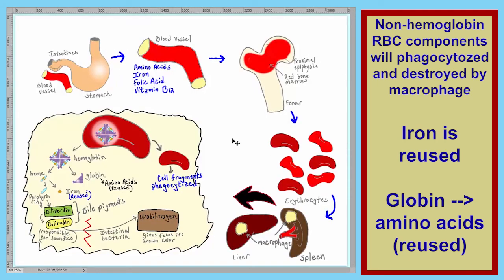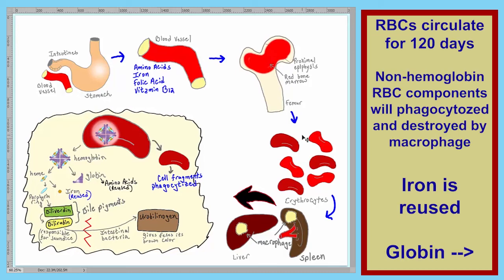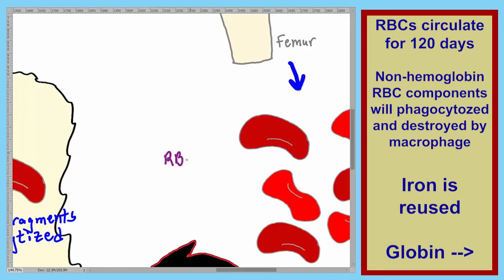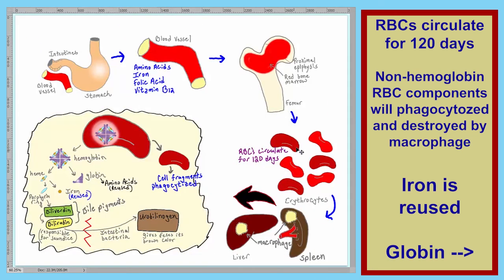This is the entire life cycle of a red blood cell. In the digestive system, we take in amino acids, iron, folic acid, and vitamin B12. These components move to the red bone marrow to produce our red blood cells. Red blood cells travel in circulation for about 120 days. Once the red blood cells are too old to pass through the capillaries, that fragility is sensed by one of two organs — the liver or the spleen. Within the liver and the spleen, we have phagocytic macrophages that take up these old red blood cells and separate the hemoglobin from the non-hemoglobin components.